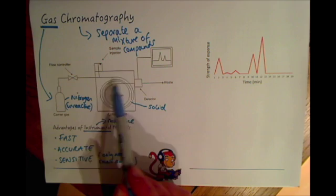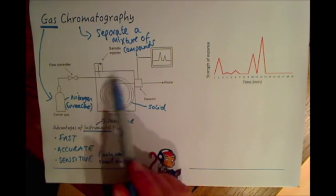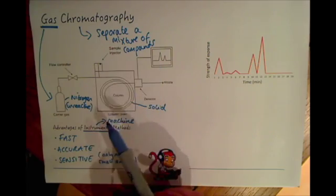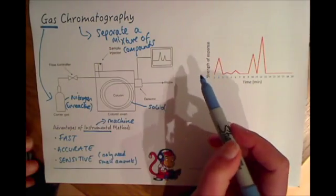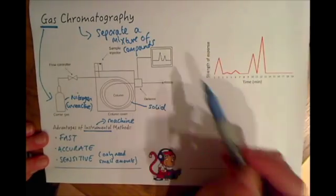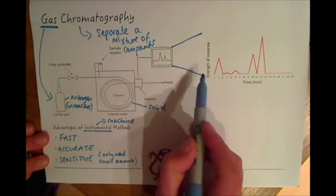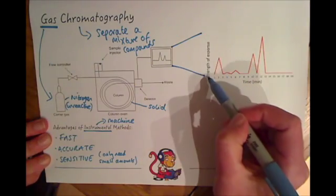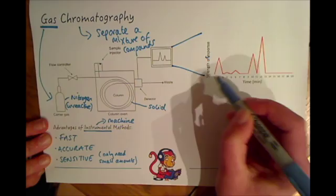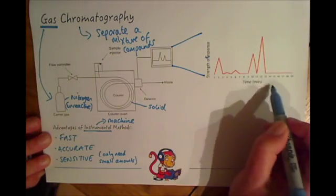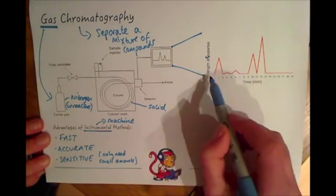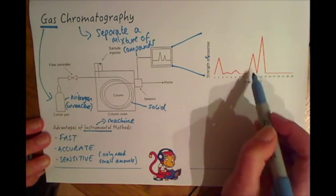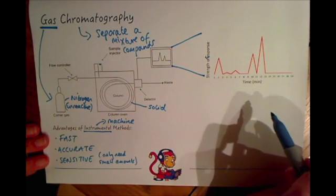In the column, the compounds interact with it in slightly different ways. There are different sized compounds, different masses of compounds, and they come out at different times. This is how we can see how many different compounds are in our sample. Looking at this example graph, the y-axis shows the strength of the response, and the x-axis shows time. On the computer, you will see these peaks on a graph as your sample comes through.